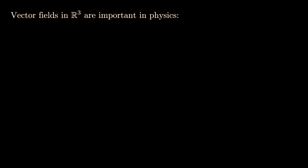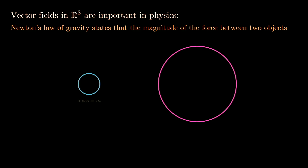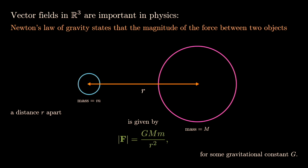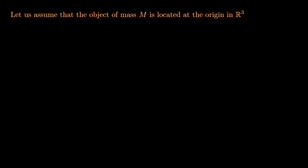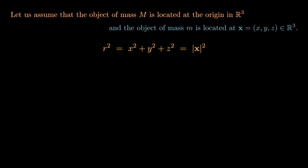One main reason vector calculus is important is that vector fields in R3 appear throughout physics. Newton's law of gravity states that the magnitude of the gravitational force between a small object of mass m and a large object of mass M is G·mM divided by the square of the distance between them. Assuming M is at the origin and m is at point x = (x,y,z) in R3, the squared distance is x² + y² + z² = |x|².